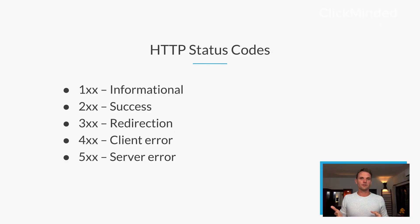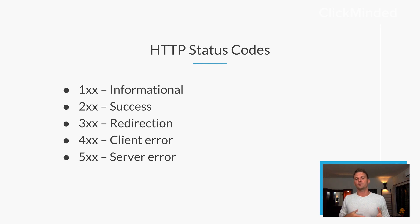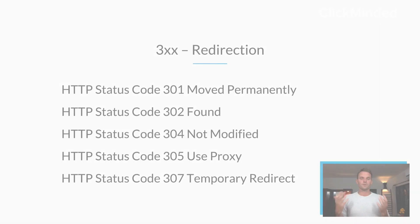Let's jump into each one of these. The 100 block — these are informational requests. The 200 block — those are successful requests. The 300 block are going to be for redirects, redirection. The 400 block will be for client errors, and the 500 block will be for server errors.